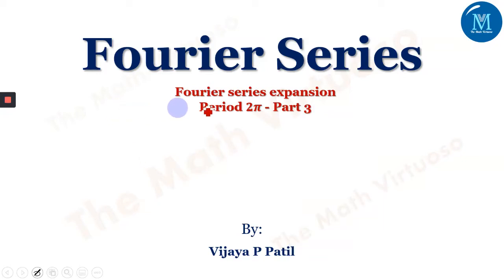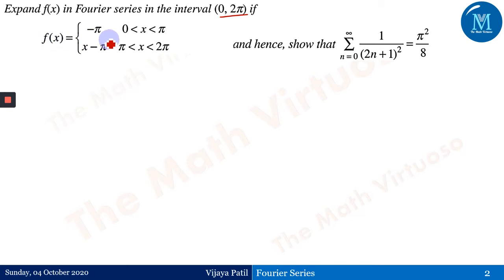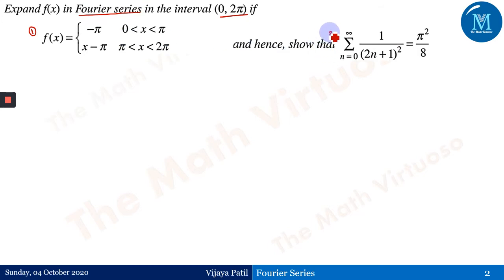Hello everyone. In continuation with the Fourier series expansion, we are still dealing with period 2π functions and examples. This is Part 3. We will expand f(x) in the Fourier series over the interval 0 to 2π, where f(x) = -π for 0 < x < π, and f(x) = x - π for π < x < 2π. This is a piecewise function defined over two different intervals. We will find the Fourier series expansion and then show the deduction part.